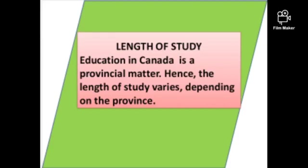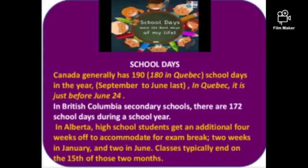Education in Canada is a provincial matter, hence the length of study varies by province. Canada has 190 school days per year, from September to June. In Quebec, school days total 180 and end just before June 24th. In British Columbia secondary schools, there are 172 school days. In Alberta, high school students get an additional four weeks off for exam breaks — two weeks in January and two in June.